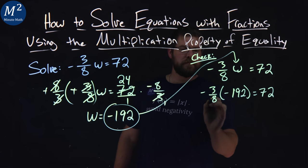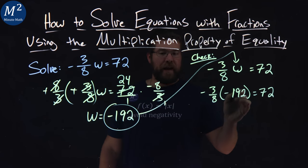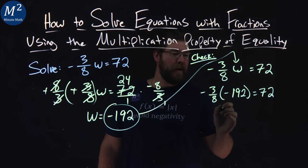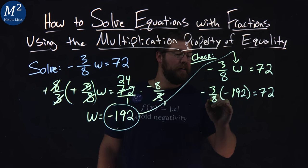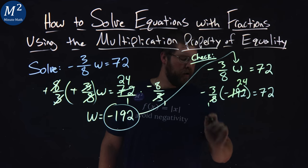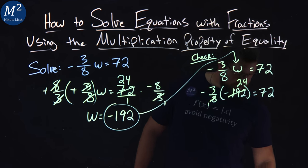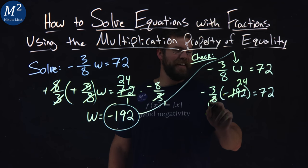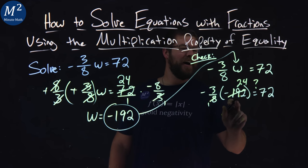From there, we want to simplify. 8 goes into negative 192, that's going to be 24 times. Yeah, I think it's 24. Just double check my notes. Yeah, 8 goes into negative 192, 24 times.